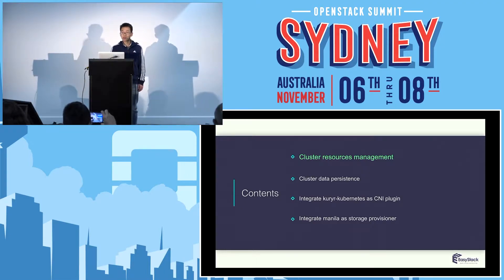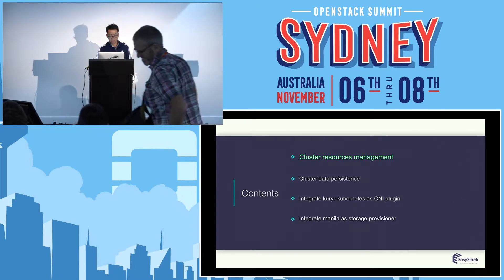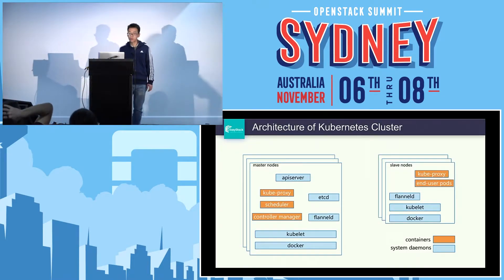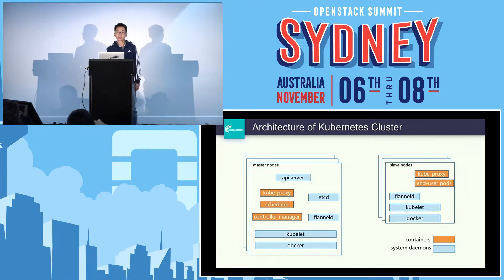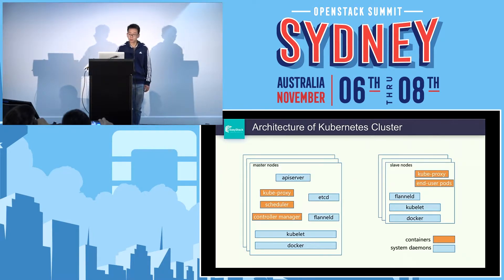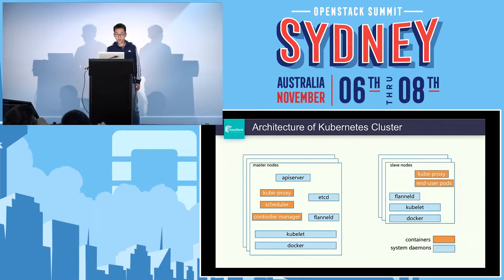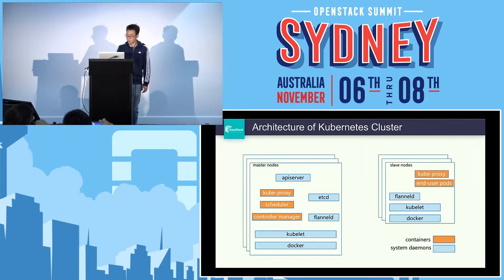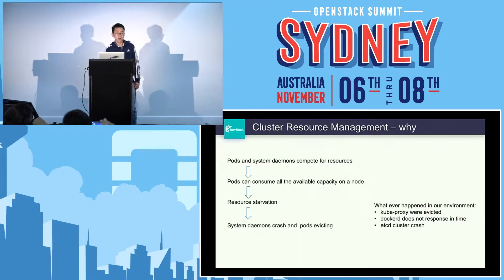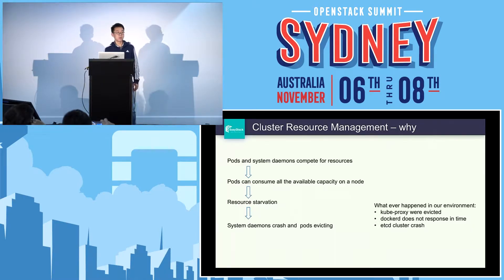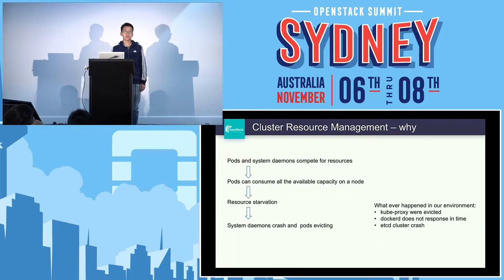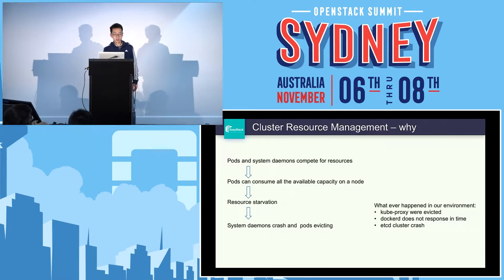First is cluster resource management. Let's review the architecture of the Kubernetes cluster. There are different components on different nodes. The orange color represents containers and the blue color represents system daemons. All the components are resource consumers. So why do we need resource management? Because the pods and the system daemons compete for resources on one node, and pods can consume all available capacity on a node without resource management.